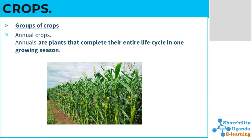Annual crops need to be replanted throughout the year. After a season you harvest the fruits, cut down the plant, and then you have to replant it. That is the difference between annual and perennial crops: perennial crops, once planted, you don't have to replant and you continue harvesting throughout the year. For annual crops you have to replant after harvesting — you clear the garden and replant the seeds.